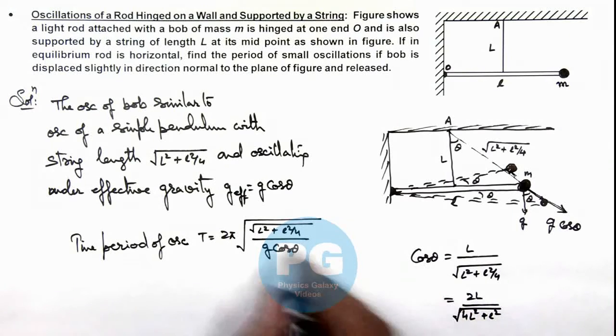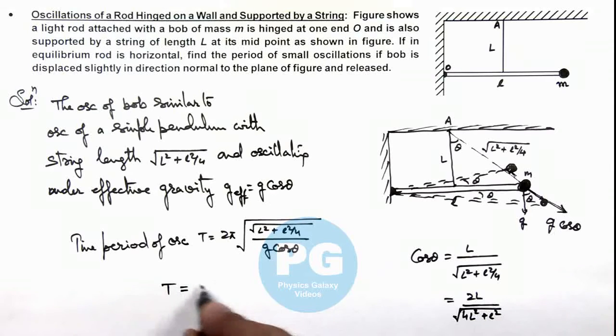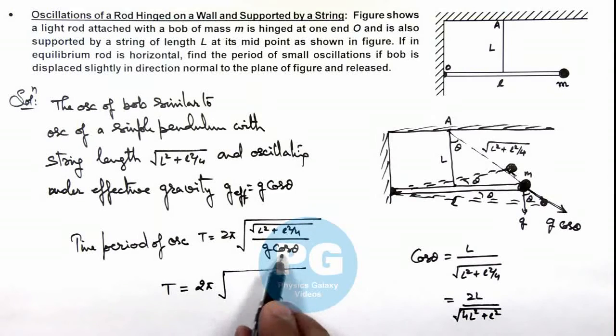If we substitute the value of cos θ here, you can see the time period of oscillation of this bob simplifies to √[(4L² + L²)/(4gL)]. On substituting the value of cos θ and simplifying, this becomes √(5L/4g).